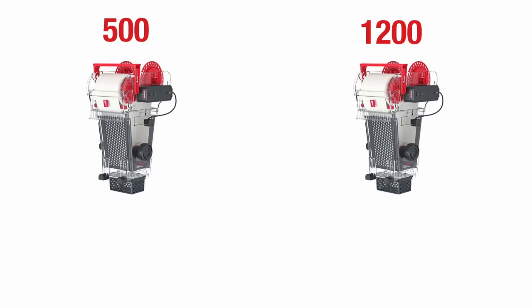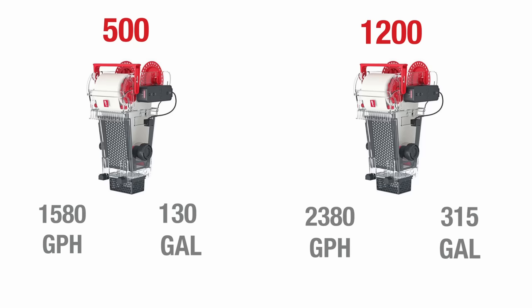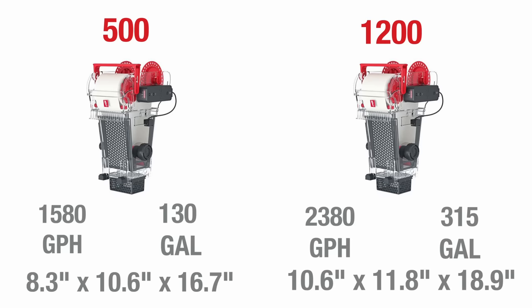The Reef Mat is available in two sizes: the 500 rated for up to 1,580 gallons per hour of flow and aquariums of approximately 130 gallons, as well as the 1200 rated for up to 2,380 gallons per hour of flow and aquariums of up to around 315 gallons, which covers a very wide range of aquariums.